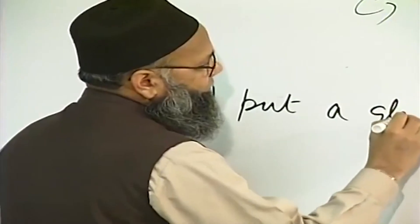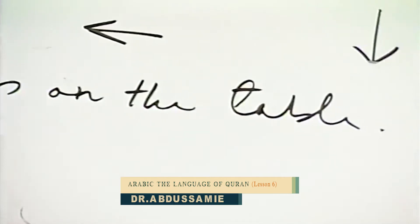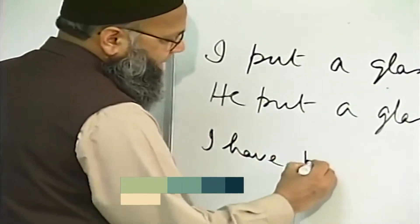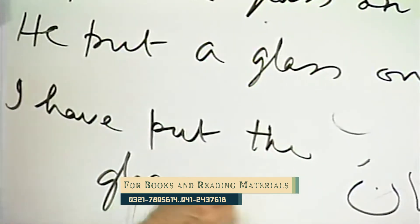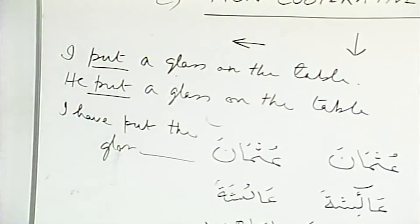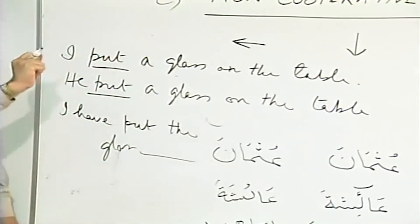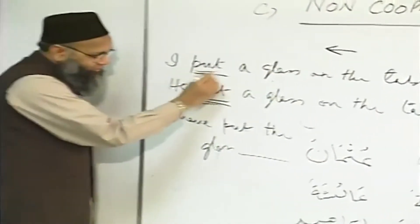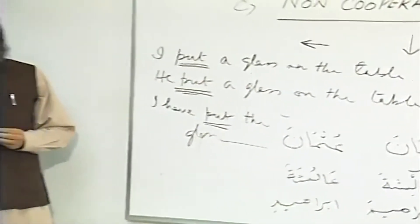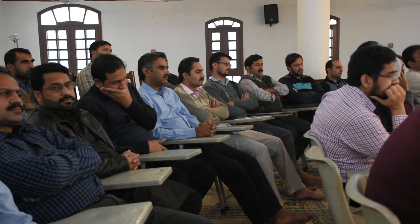For example: 'I put a glass on the table.' 'He put a glass on the table.' 'I have put the glass on the table.' Which form is this? This cannot be the first form - this is definitely past. This can be past or present. In the third person in present you have to add 'puts', so this is definitely second form. And this is first or second form. And 'I have put' is definitely third form. So it is the context which makes you understand which form it is. In Mabni, from the context we recognize Rafa form, Nasb form, or Jar form.